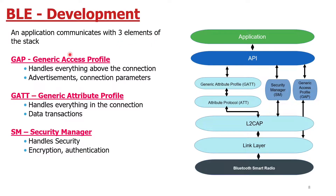An application communicates with three main elements of the stack. The first is GAP — Generic Access Profile — which handles everything above the connection. GAP handles connecting to a device: all connection parameters are managed using GAP. The second is GATT — Generic Attribute Profile — which handles everything within the connection, after we've connected using GAP.